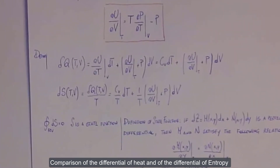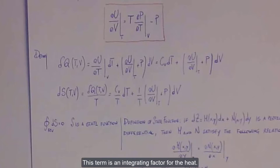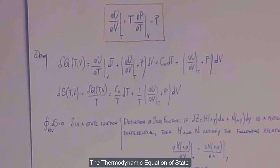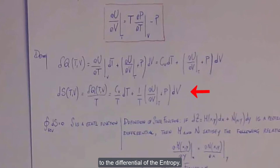A comparison of the differential of heat and of the differential of entropy shows that the difference between the two is just the term 1 over T. This term is an integrating factor of temperature for the heat — it turns the heat from a path function to a state function. The thermodynamic equation of state can be retrieved from the application of the definition of state function to the differential of entropy.